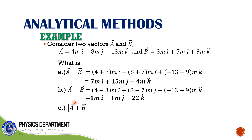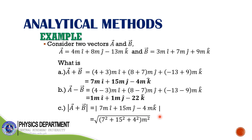How about finding the magnitude of A plus B? A plus B equals 7 i-hat plus 15 j-hat minus 4 k-hat. To find the magnitude, remember you can always calculate it using the square root of the sum of squares of its components: the X component, the Y component, and the Z component. Take the square of each, add them, and take the square root. The magnitude of A plus B equals 17 meters.